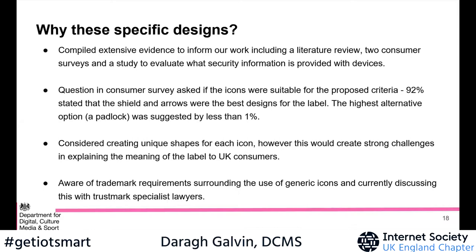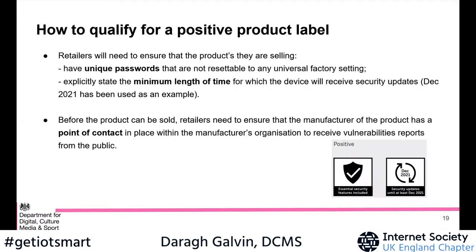On slide 19, how do you qualify for the positive product label? As I mentioned, you hit those top three requirements. We need to ensure the manufacturer has a point of contact in place within their organization for guideline two. That's all about how you can qualify for it.